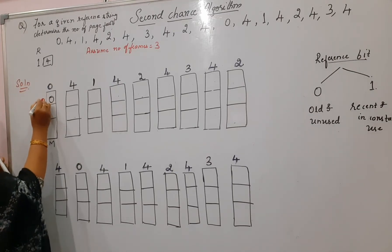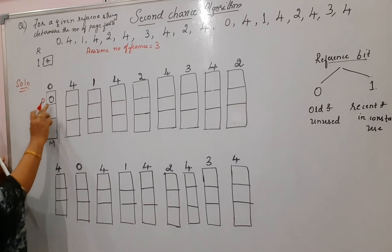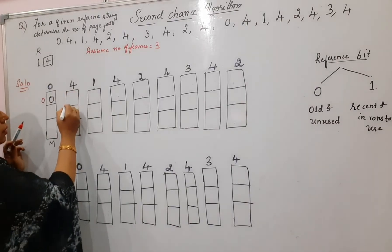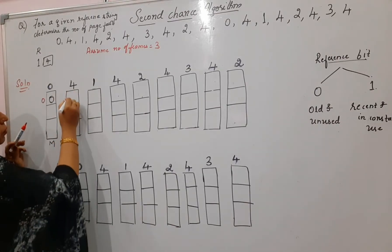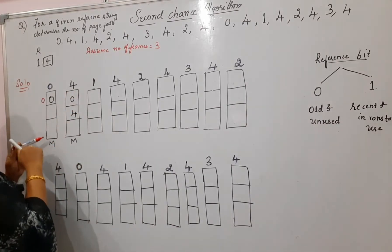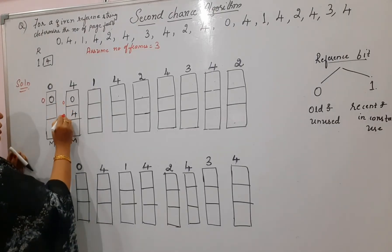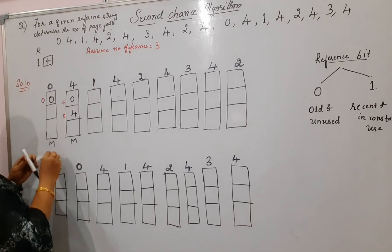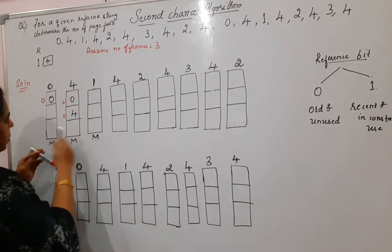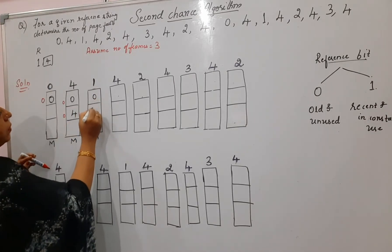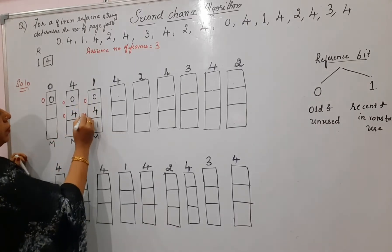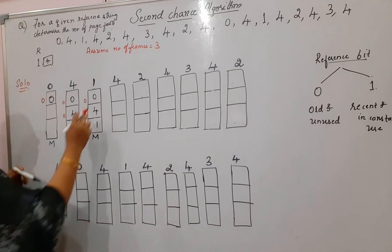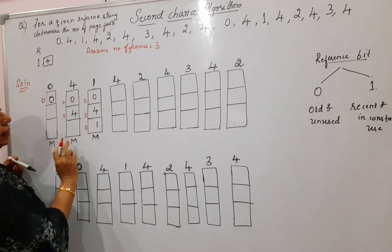Page 0 is placed with reference bit zero — miss. Next is page 4, also a miss — place page 4 with reference bit zero. Next is page 1, another miss — write 'M', place page 1 with reference bit zero. Now all three frames hold pages 0, 4, 1, each with reference bit zero.